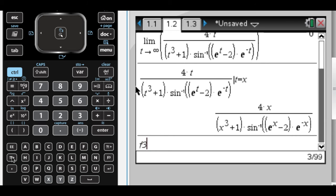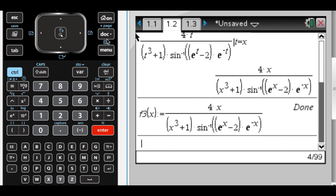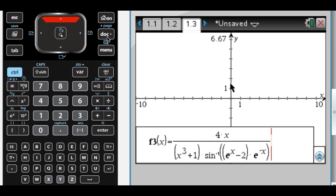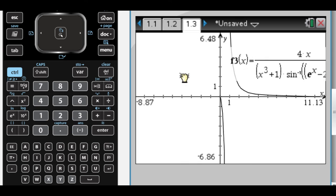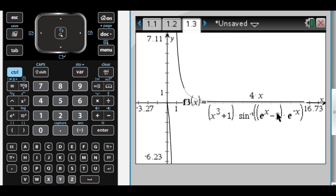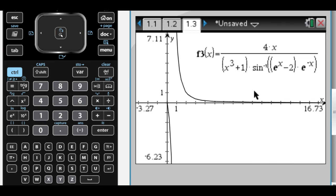And then let's say f3 of x set equal to this. And then if we insert a graph and look at it, you can tell that it's going to 0. So that would be my answer to that.